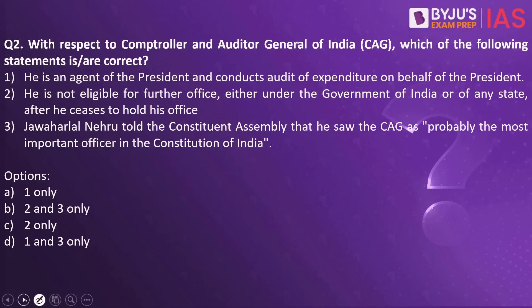With respect to the Comptroller and Auditor General of India, which of the following statements are correct? Statement one: he is an agent of the president and conducts audit of expenditure on behalf of the president. Statement two: he is not eligible for further office either under the Government of India or any state after he ceases to hold his office. Statement three: Jawaharlal Nehru told the Constituent Assembly that the CAG is probably the most important officer in the constitution of India. The answer is statement two only.